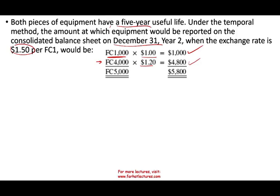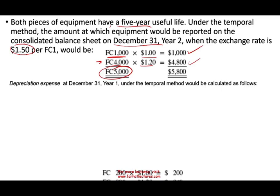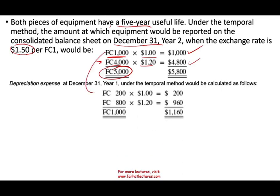Under the current method, these amounts would simply be multiplied by 1.5 (the December 31st rate) — but under the temporal method we don't care about the current rate. For depreciation under the temporal method: the first asset has 1,000 × 20% = 200 depreciation, translated at the rate of 1.0; the second asset has 4,000 × 20% = 800 depreciation, translated at 1.2. Notice the depreciation expense uses a different rate for each asset — that's the key distinction of the temporal method.